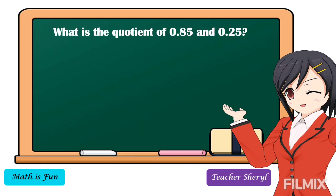Another example: what is the quotient of 85 hundredths and 25 hundredths? To get the answer, first we're going to move the decimal point in our divisor to the rightmost digit to make it a whole number — so we move one, two. Since we move two decimal places in our divisor, we're going to move also two decimal places in our dividend. Then we're going to affix the decimal point in our quotient. Then let's divide.